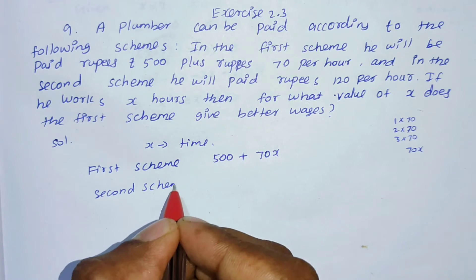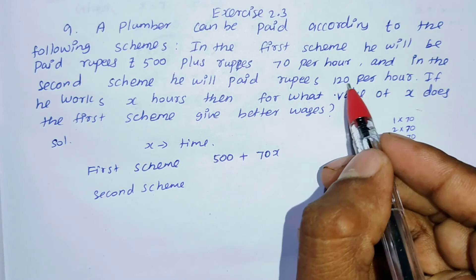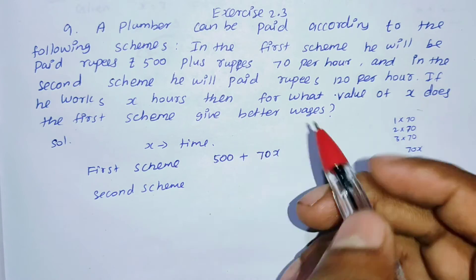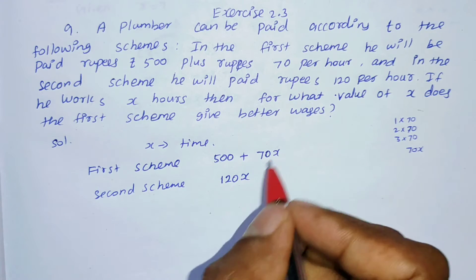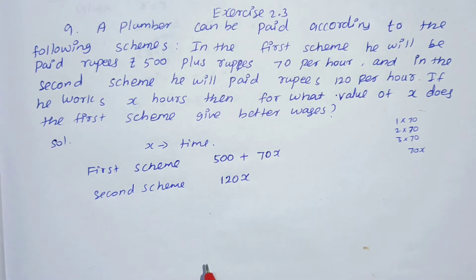Second scheme is 120 rupees per hour, basic amount of money, 120 into x. Same formula, 120 into x.